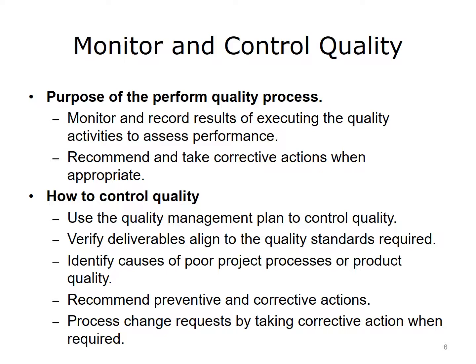Checking these things at the end of the project cycle will probably require additional rework, money, and resources. The quality management plan details how quality control should be performed throughout the project. Verify deliverables and make sure they align to the quality standards. Identify causes of poor process or product quality. Recommend and implement preventive and corrective actions.